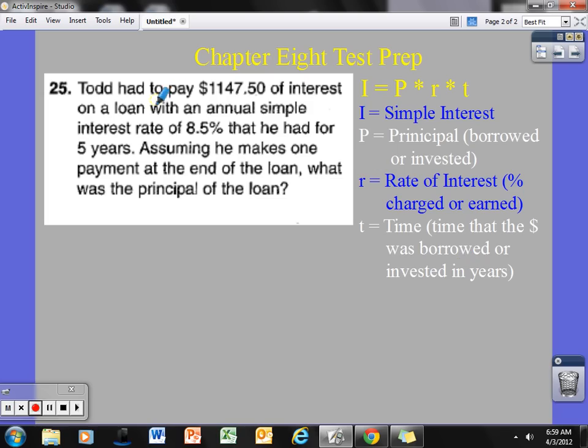If we take a look here at our problem, Todd had to pay $1,147.50 of simple interest on a loan with an annual simple interest rate of 8.5% that he had for five years. Assuming he makes one payment at the end of the loan, what was the principal of the loan?